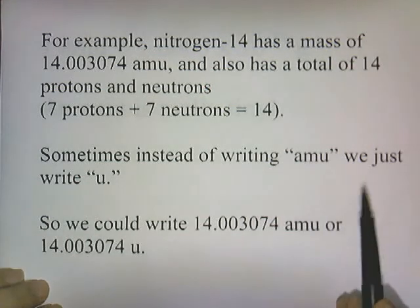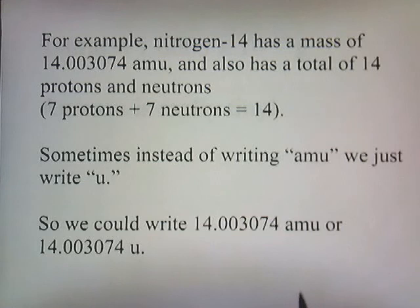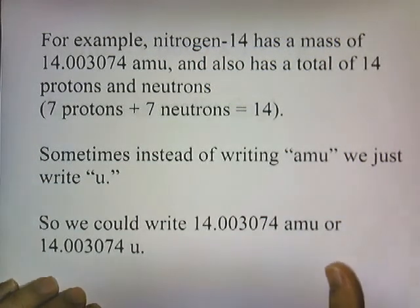Now also, instead of writing atomic mass units, we just write the letter U. So we could write the mass of nitrogen-14 as 14.00307 amu, or we could just write 14.003074 u. In some chemistry books they just use amu, in some chemistry books they use u, so it just depends on what chemistry book you're using.